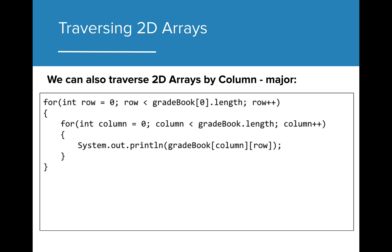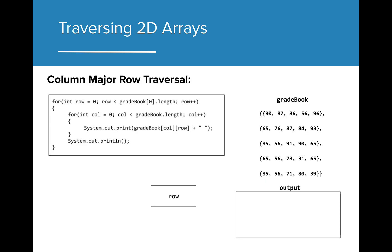The 2D traversal that we just explored uses Row Major Order. To access 2D arrays in Column Major Order, we can do so by making a small adjustment to the Row Major algorithm. If we switch the placement of the row and column when accessing the gradebook, this will change the way that the 2D array is traversed. With this switch, the outer loop row now represents the column, and the inner loop column represents the row. As the column variable iterates, it moves through each row value, while the variable row stays on the same column value. Let's take a quick look at how this works.